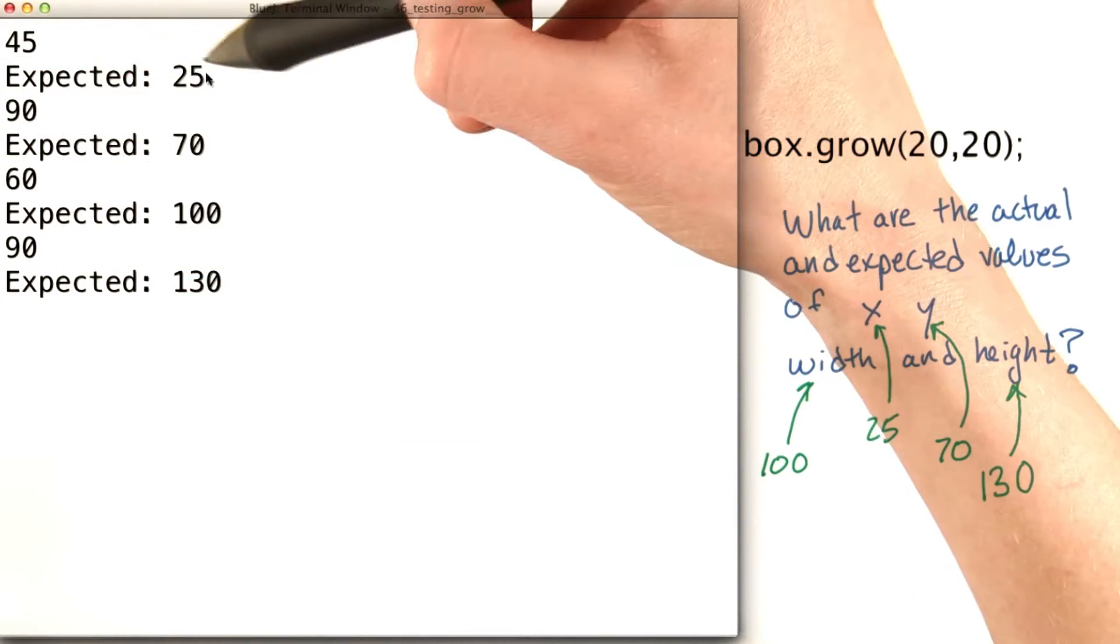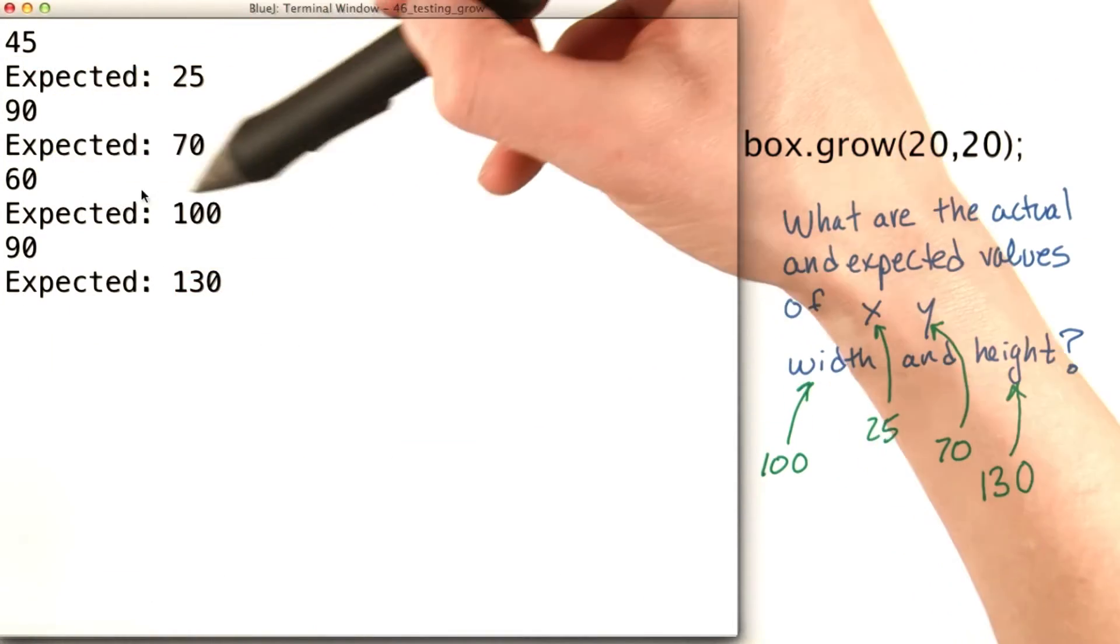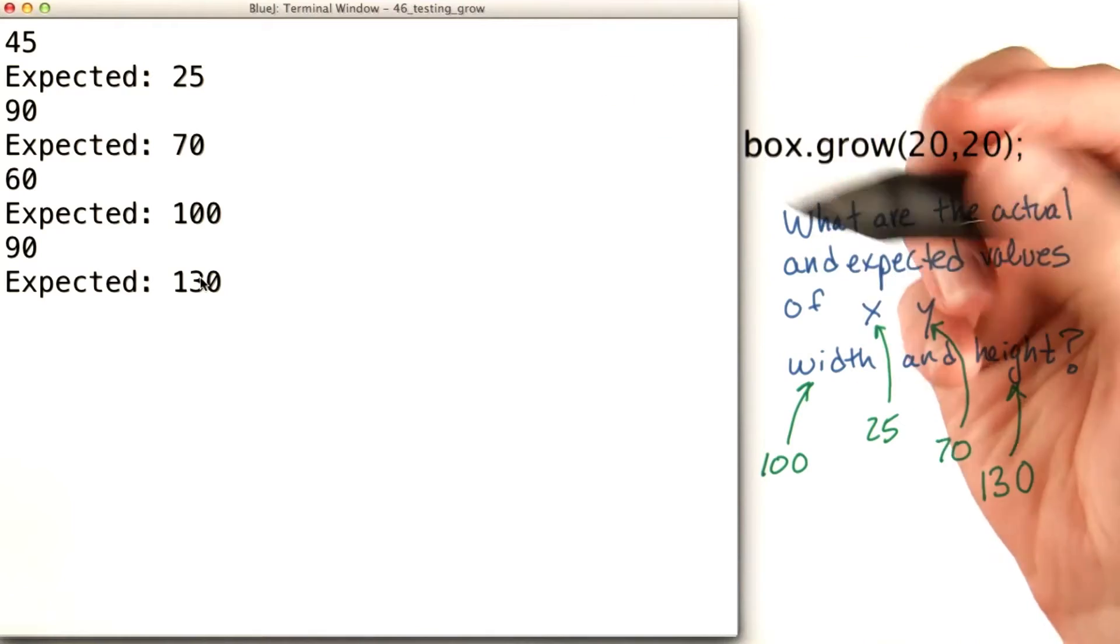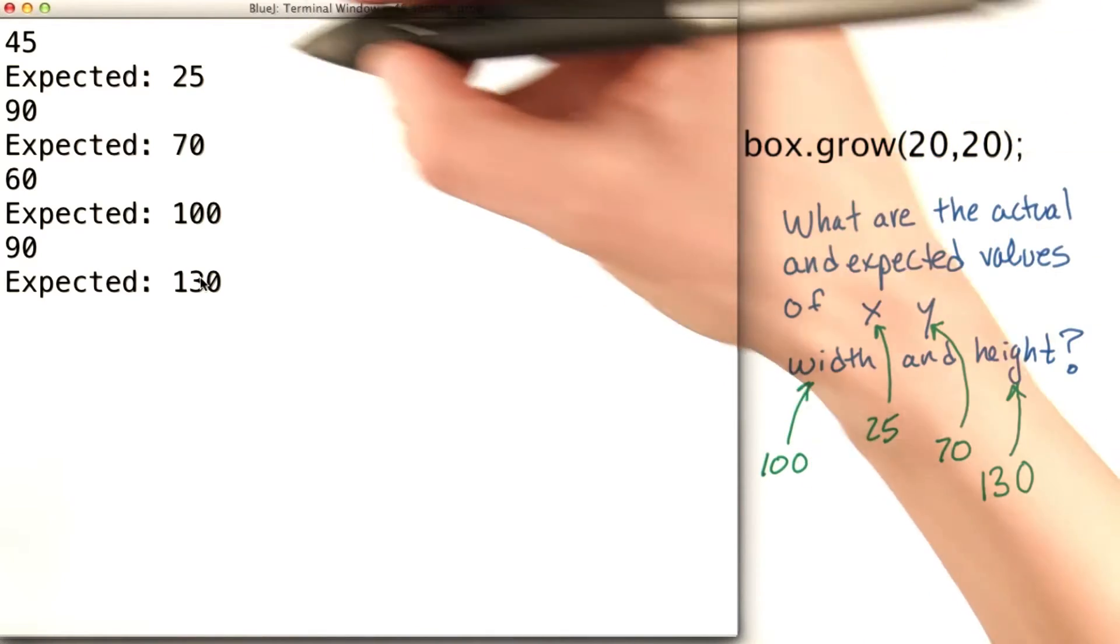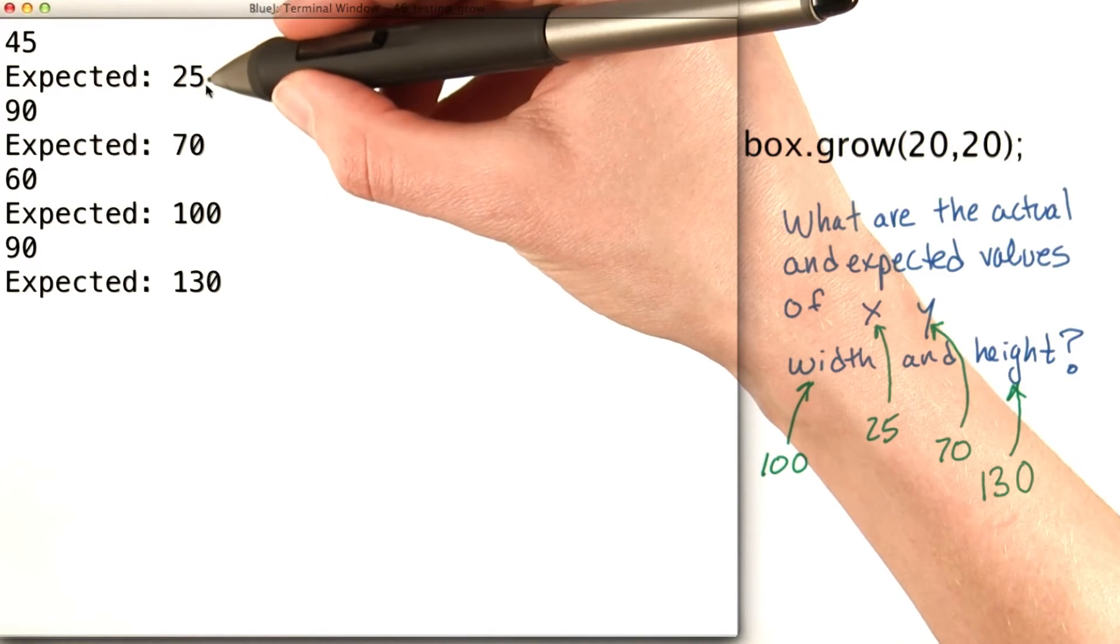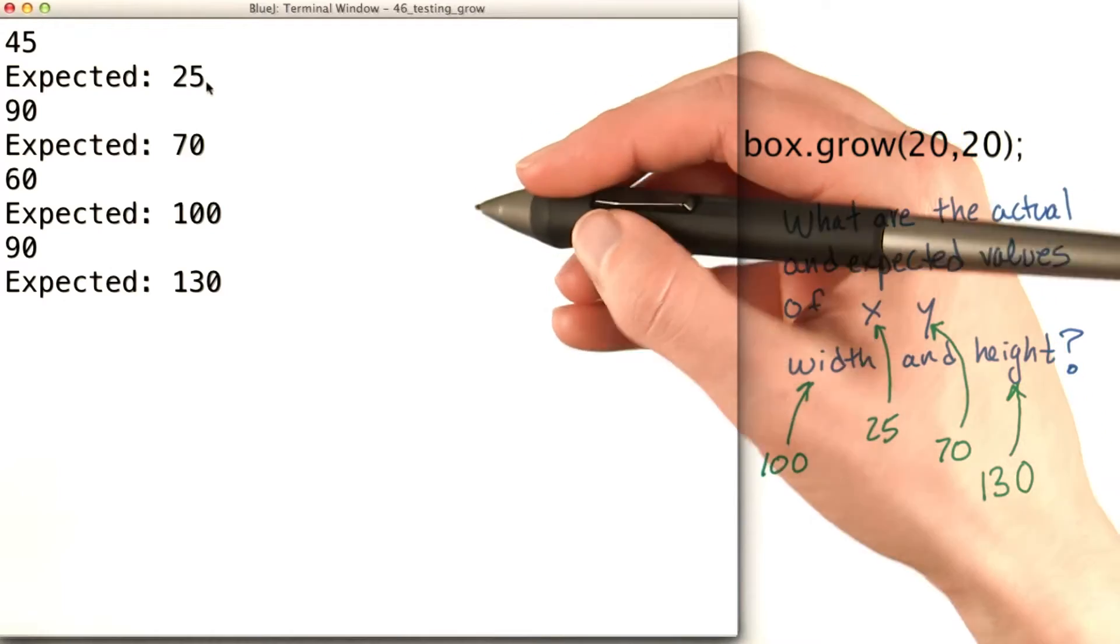And I printed 45, 25, 90, 70, 60, 100, 90, and 130. Looks like the actual values don't match my expectations. What went wrong?